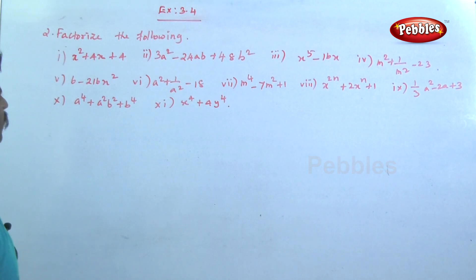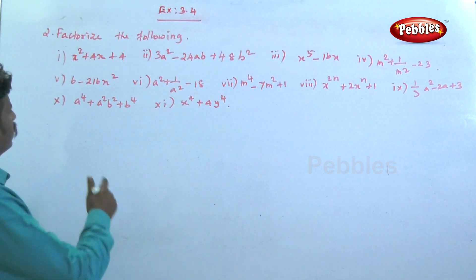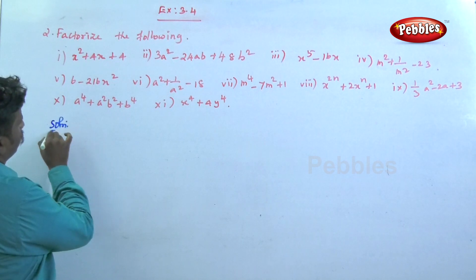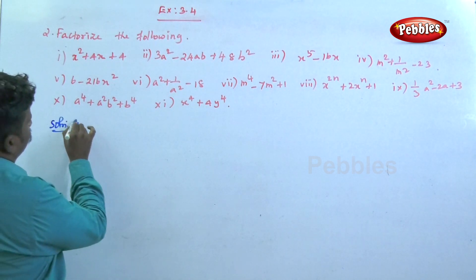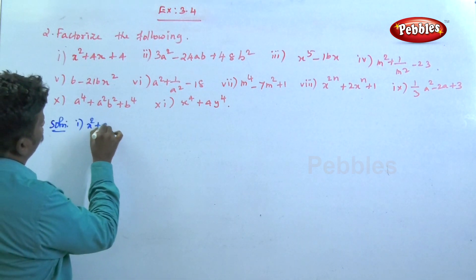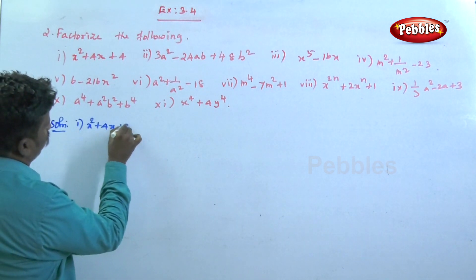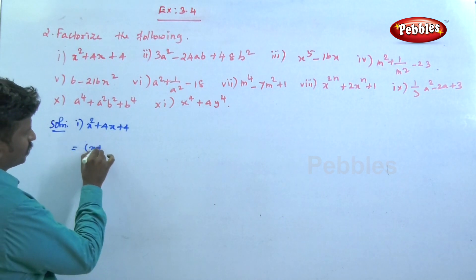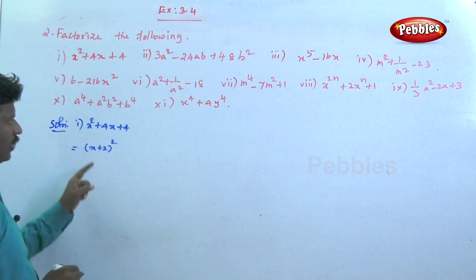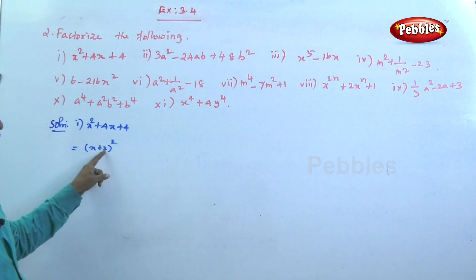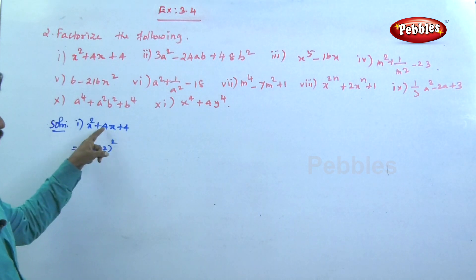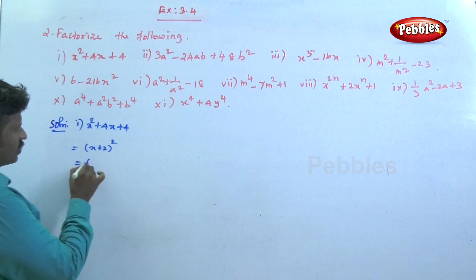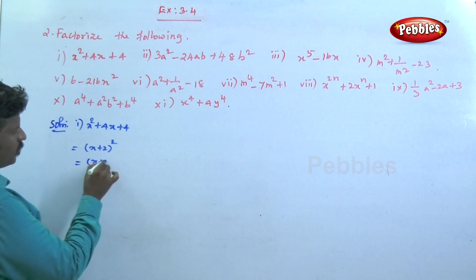The second question: factor x squared plus 4x plus 4. This can be written as x plus 2 the whole square, using the identity a plus b whole square equals a squared plus 2ab plus b squared. So this can be written as x plus 2 into x plus 2.